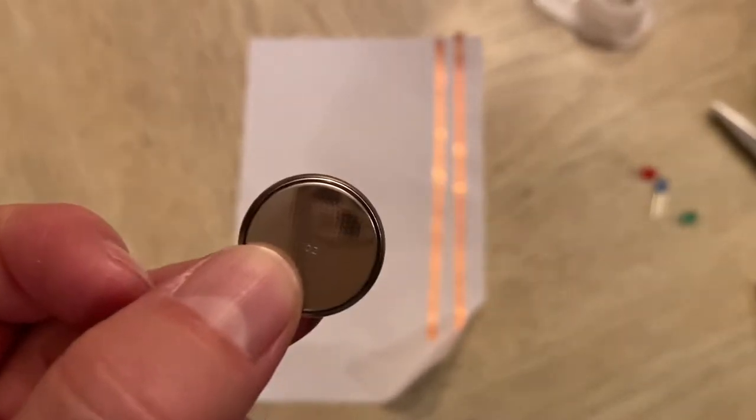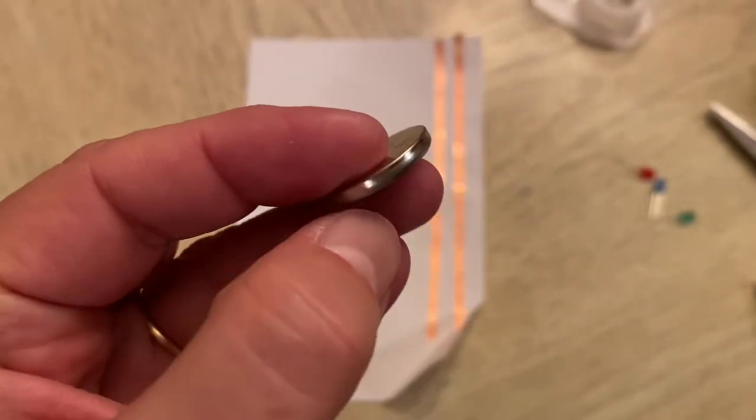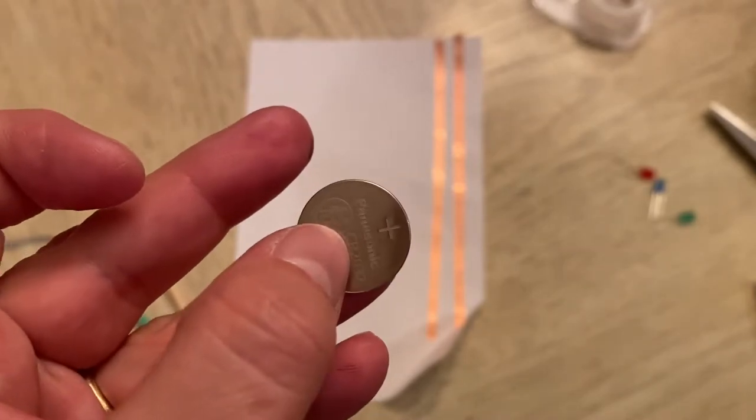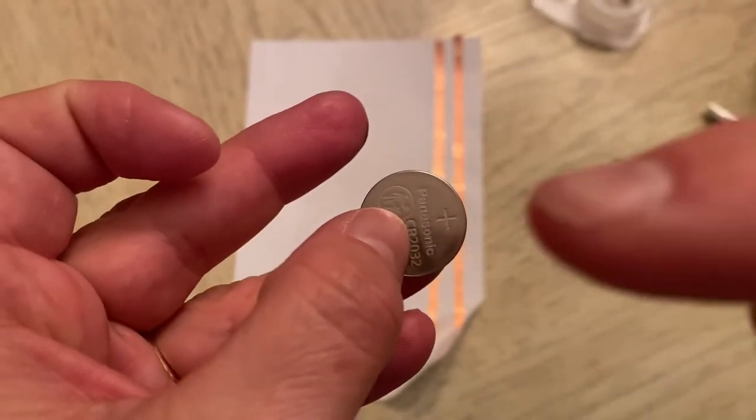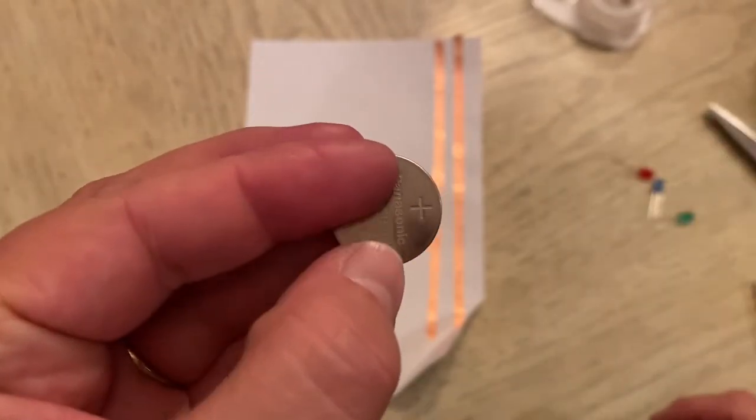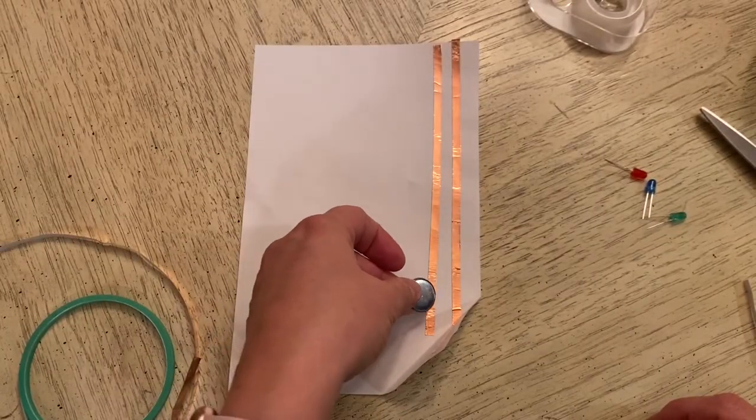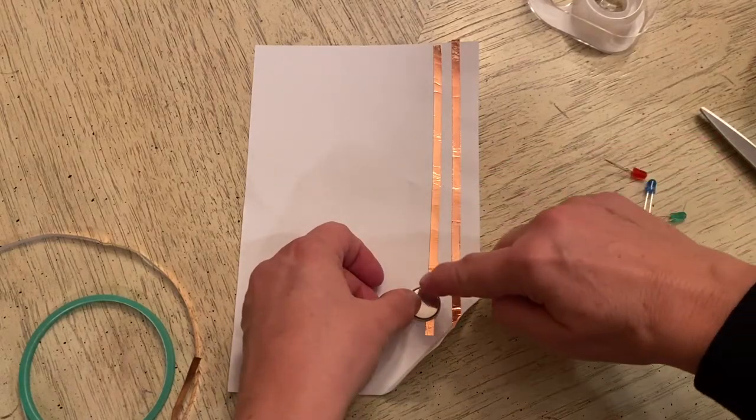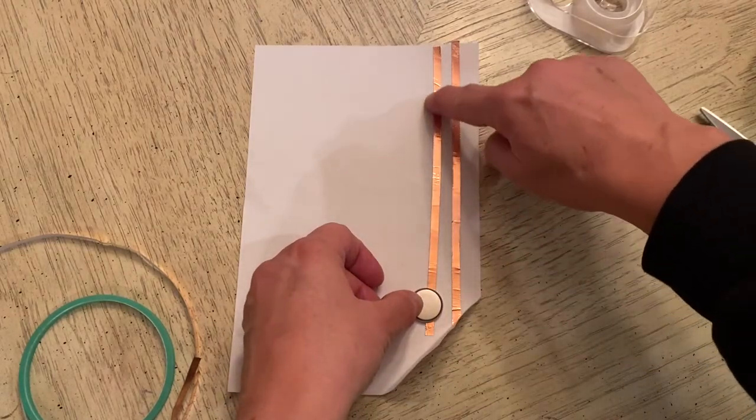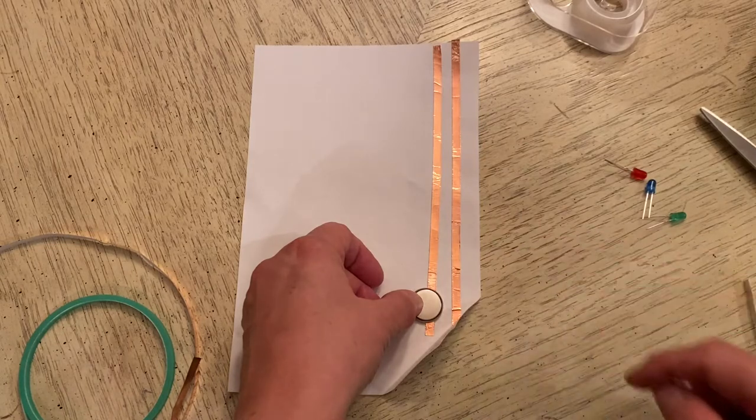Next, I'm going to attach my battery. And I am going to put the, you see the positive sign there? I'm going to put that on this side of the tape. So this is going to be my positive side of my circuit.